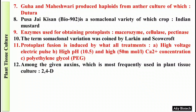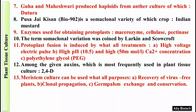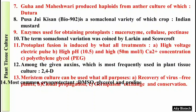Question 12: Among the given auxins, which is most frequently used in plant tissue culture? The answer is 2,4-D. Question 13: Meristem culture can be used for recovery of virus-free plants, clonal propagation, germplasm exchange, and conservation.